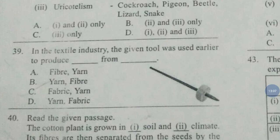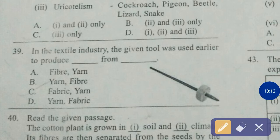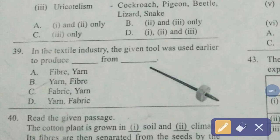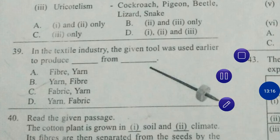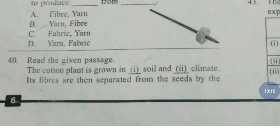Question number 39. In the textile industry, the given tool was used earlier to produce blank from blank. The correct answer is option number B — yarn from fiber.